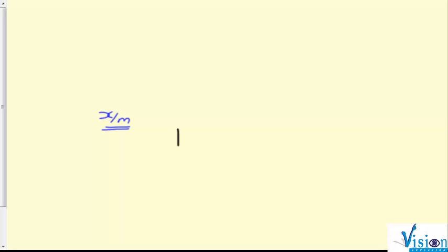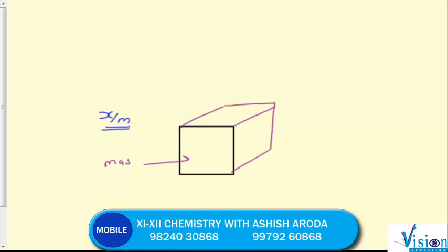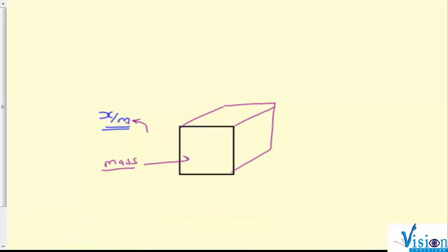What is x by m? Let me explain you. See, first of all we talk about m - suppose our adsorbent, which is the mass of adsorbent. First thing we need to consider is this. Second thing, when these gases, adsorbate, are happening here, at that time there are two phenomena.